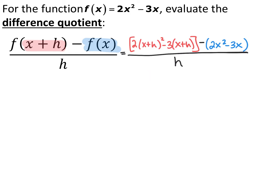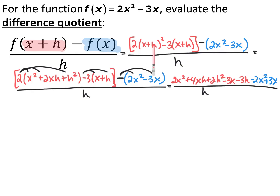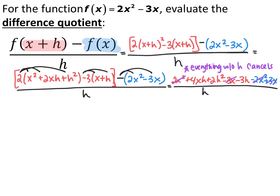Now I simplify algebraically. First, I expand x plus h quantity squared to get x squared plus 2xh plus h squared — another common mistake is not expanding this but just distributing the squared. Then I distribute the 2, the negative 3, and the negative 1, getting 2x squared plus 4xh plus 2h squared minus 3x minus 3h, then negative 2x squared plus 3x, all still over h. If you've done everything correctly, everything without an h in the numerator should cancel out.